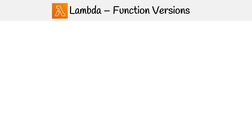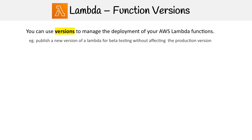Lambda has something called function versions, and the idea is to allow you to apply versioning to your lambdas. For example, if you need to deploy a new version just for beta testing and you don't want to affect your production version, you could use versioning for that. Or if you wanted to roll back to a previous version and have a history of all the changes you made over time, that is another use case for versioning.